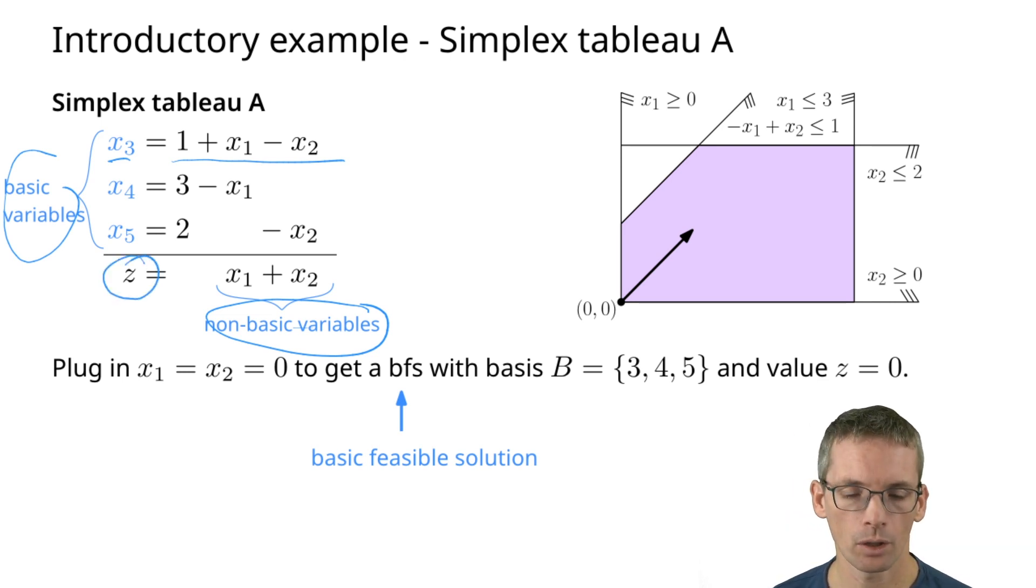In our case this is x1 and x2. The basic feasible solution we get by setting x1 and x2 to zero. Then we can immediately read off what x3, x4 and x5 are, namely simply those values here. We can also immediately read off what the objective value is, namely z is, if those two are zero, z is simply zero.